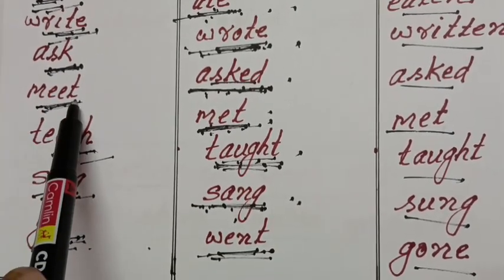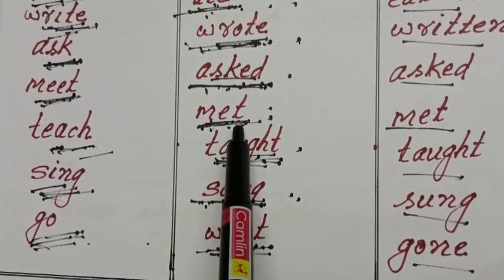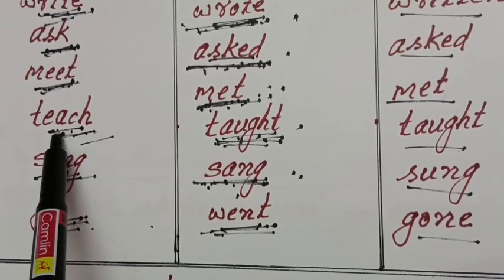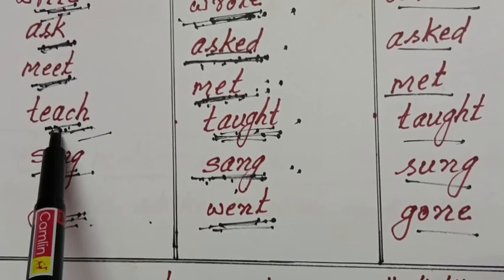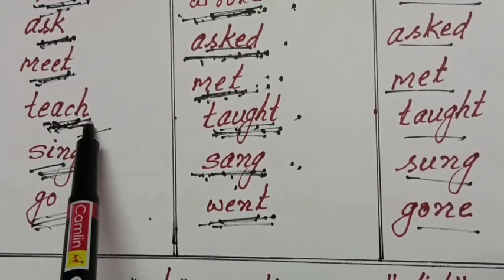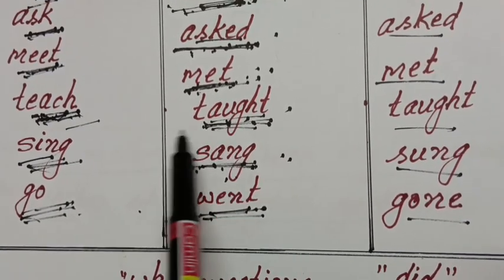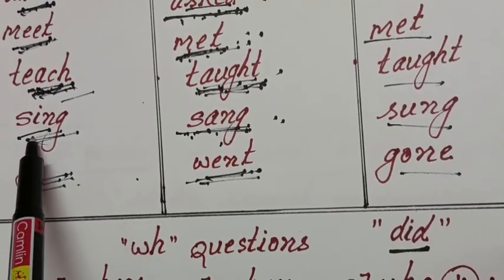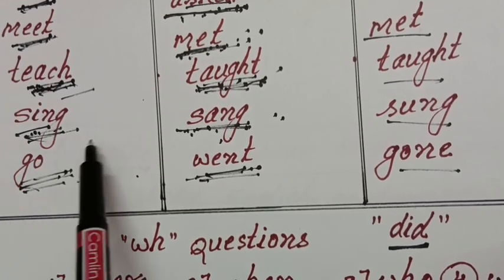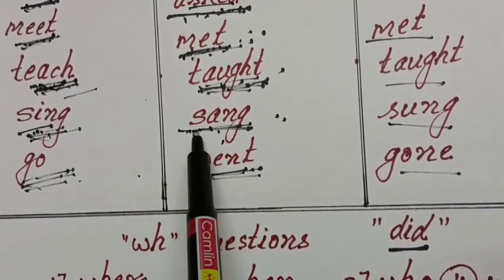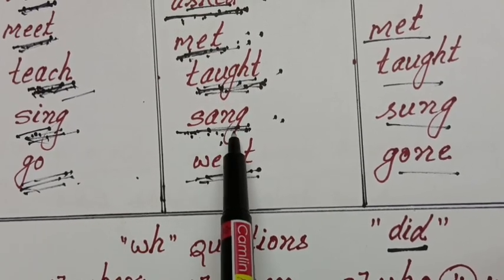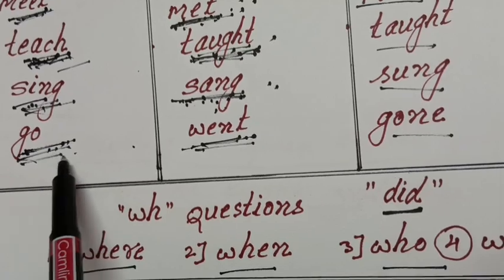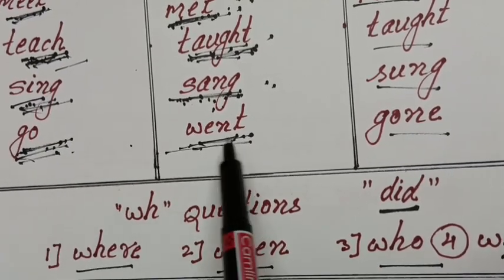Whose mother met our uncle? Your mother met my uncle. Whose teachers teach English in the class? Their teachers taught English in the class — second form. Whose son sang? My son sang. Whose uncle went to Allahabad? My uncle went to Allahabad.